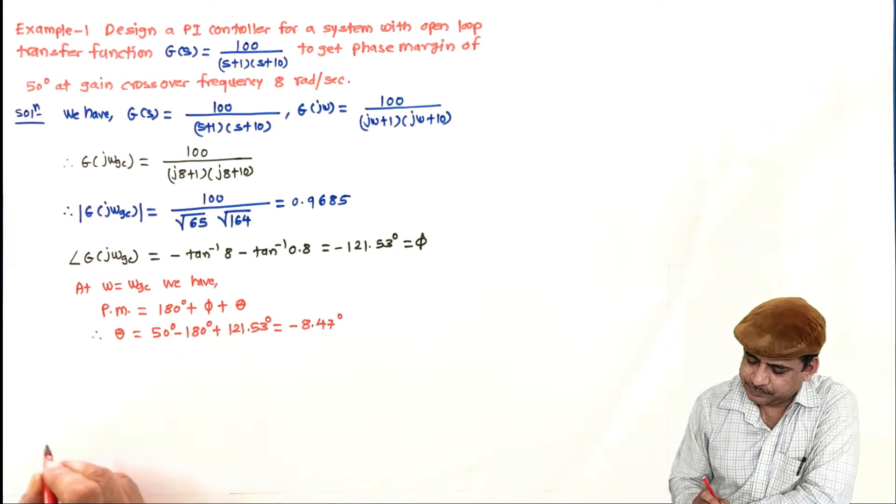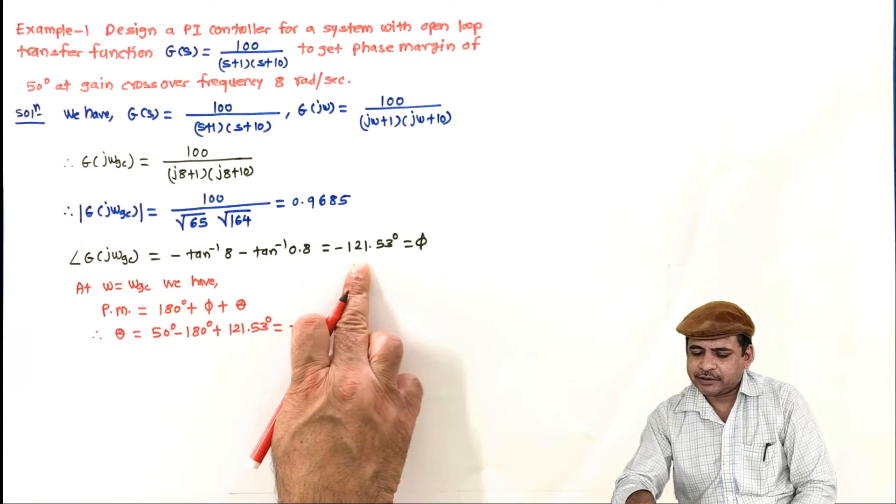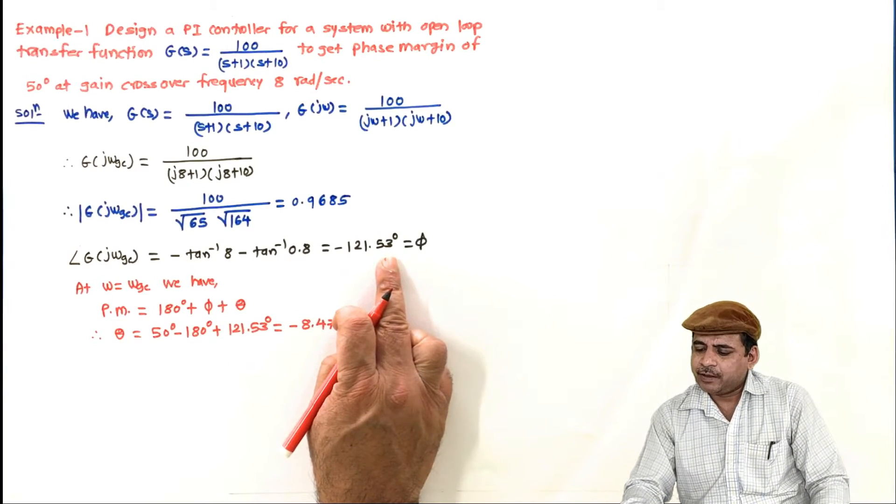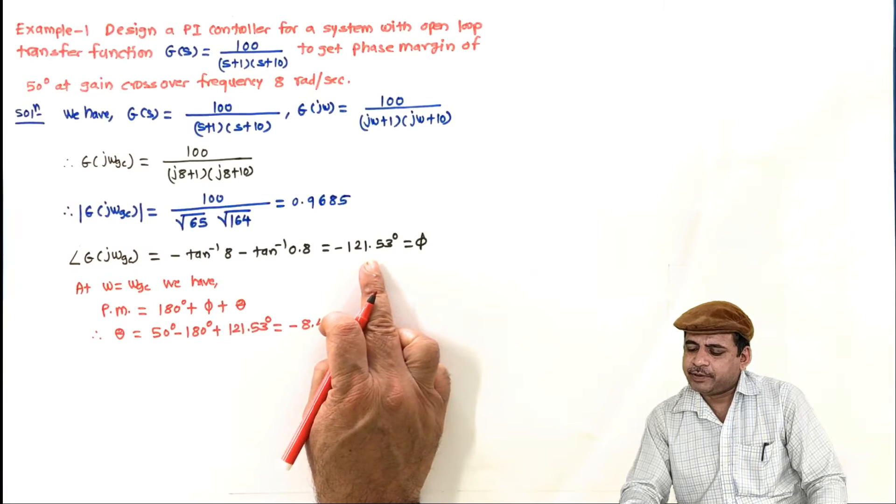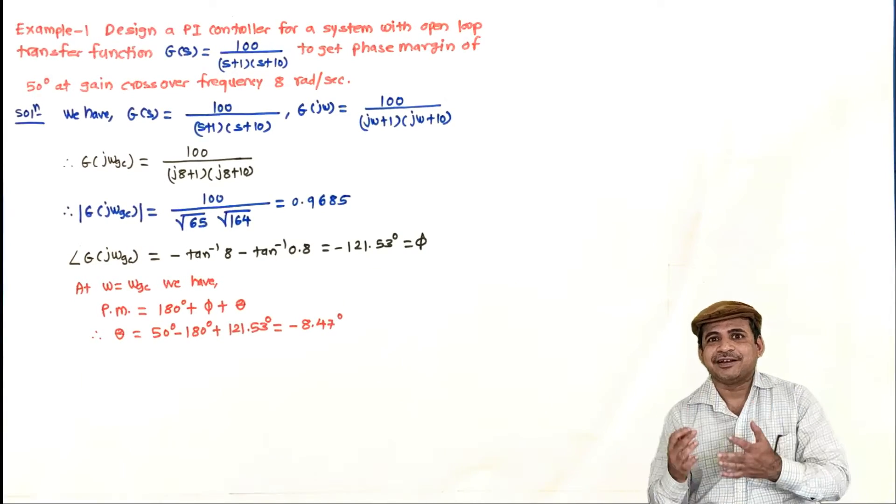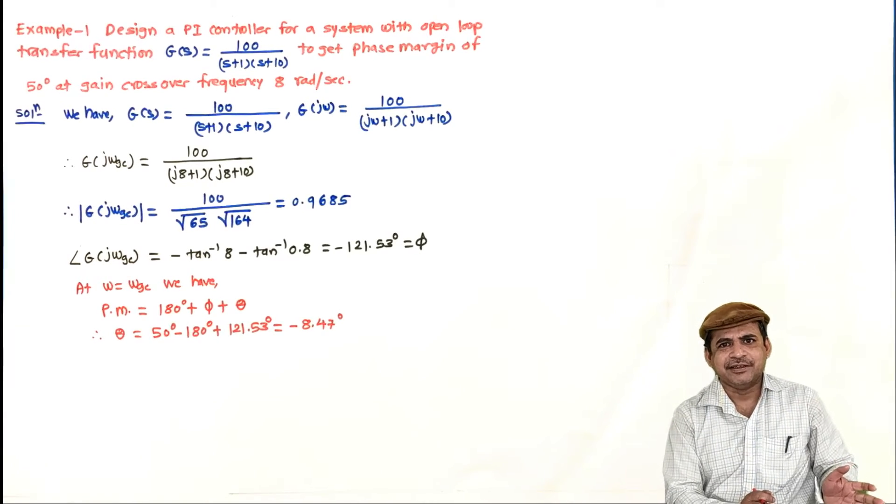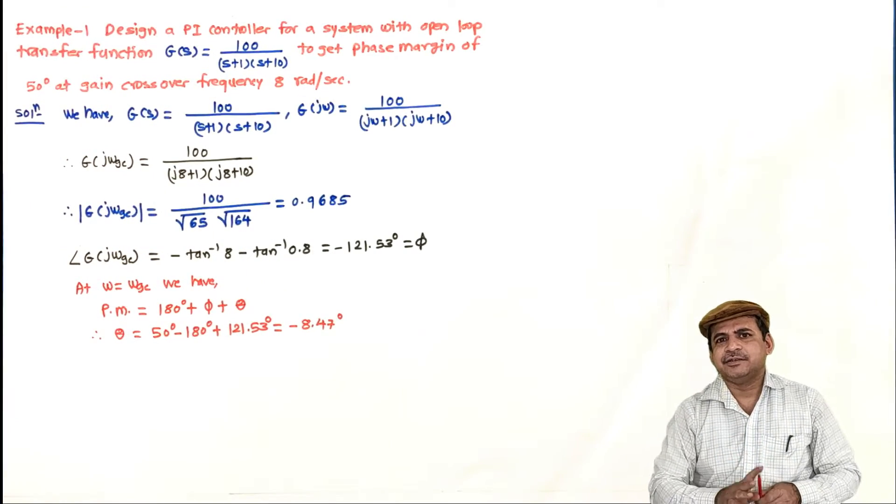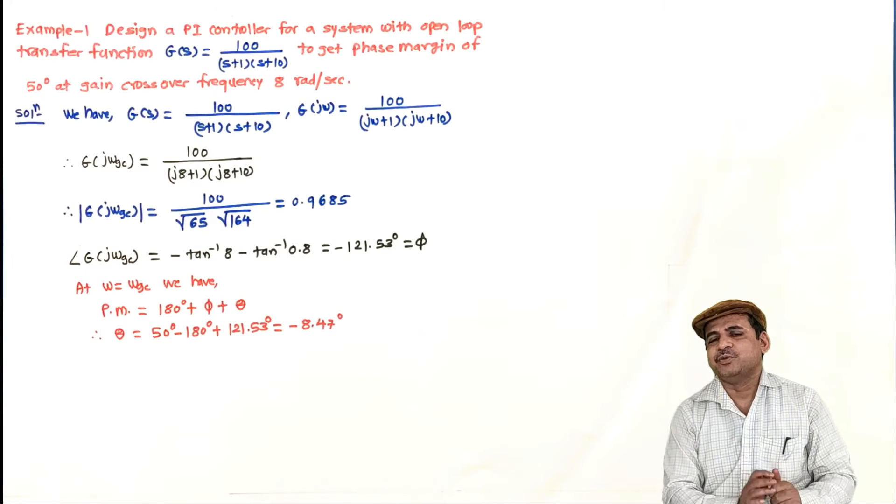Because if you see for this system, the system phase is minus 121, means already its phase margin is 58.47 degrees. Already it is better and we are reducing it. Phase margin is reducing means we are reducing the stability. But what is the purpose of using this PI controller? Purpose is to improve the steady state performance, remove the steady state error at step input.